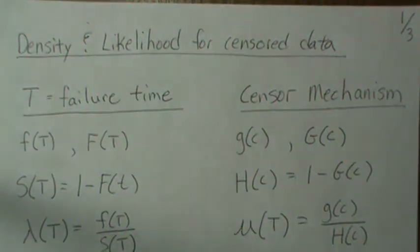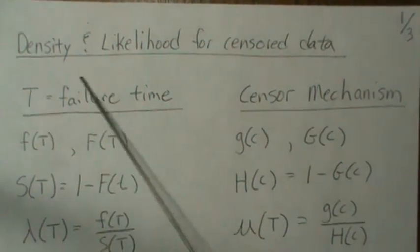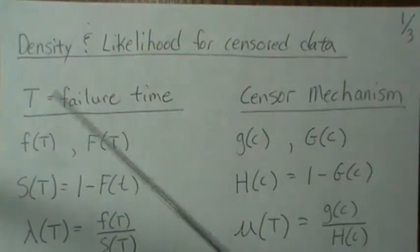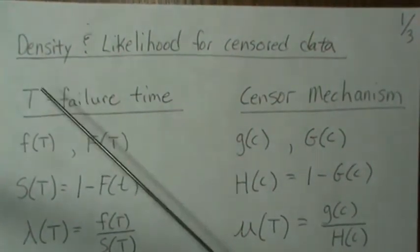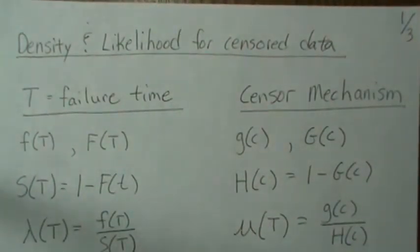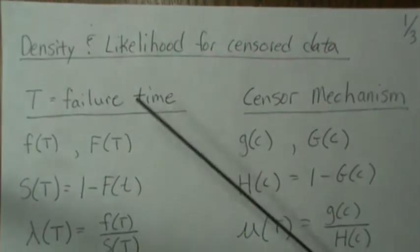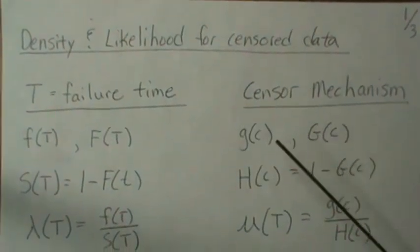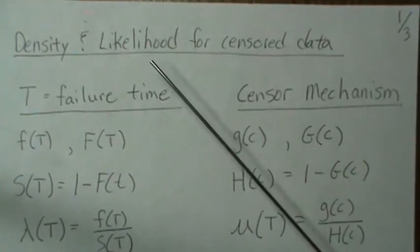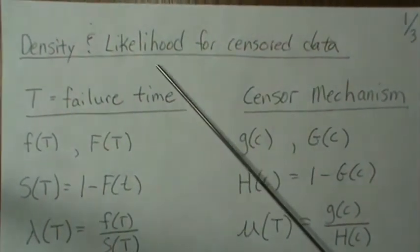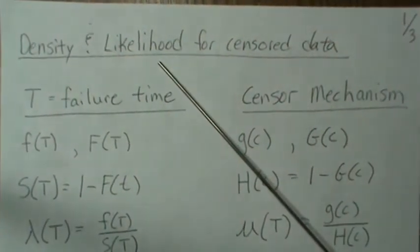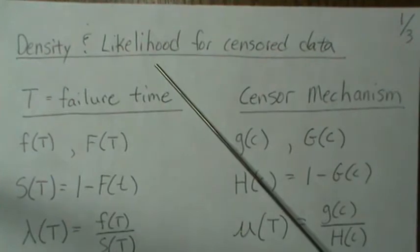In this video, we're going to derive the density and likelihood for censored data. And I'm going to stress density because most books you read, and even websites, they will only show the likelihood for sensor data. The density and likelihood are essentially the same thing, and after this video, you'll see that they only provide part of the likelihood for sensor data.